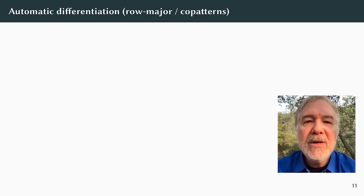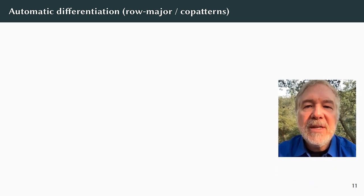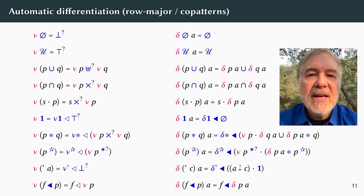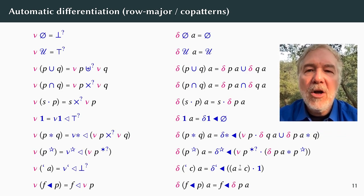Given our co-inductive representation, we need only define the language building blocks. The definitions shown on this slide are also systematically derived from the language lemmas shown earlier in the talk, using the compositional deciders. This time, the definitions are to be read in row-major order, that is, each row is one definition and is given by co-pattern matching.